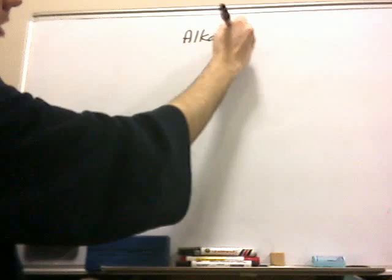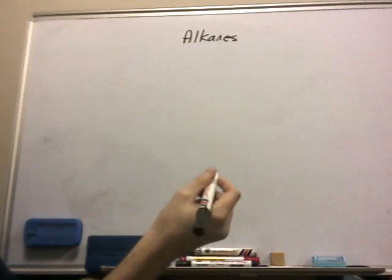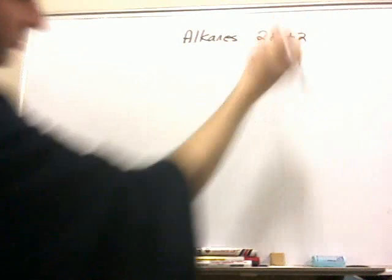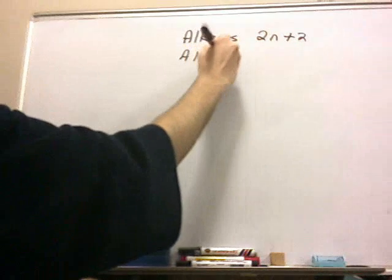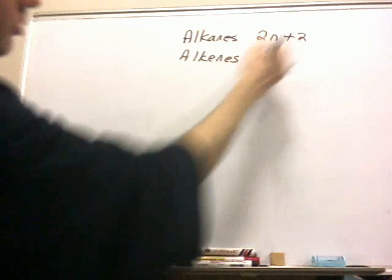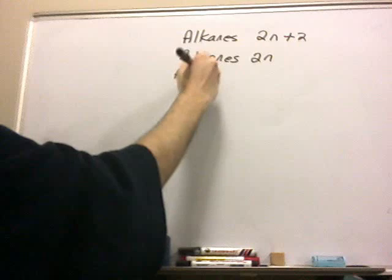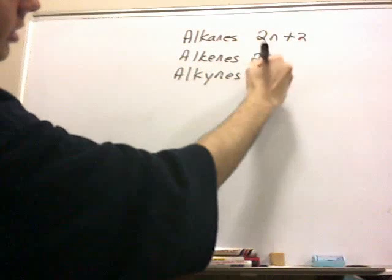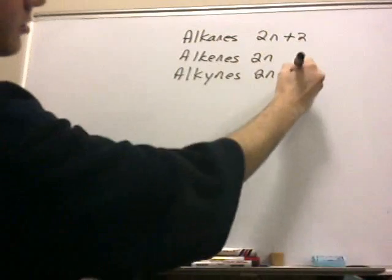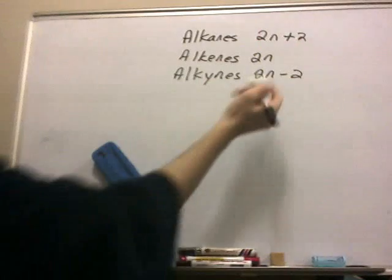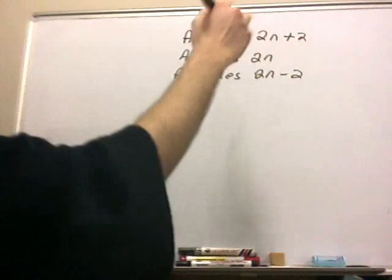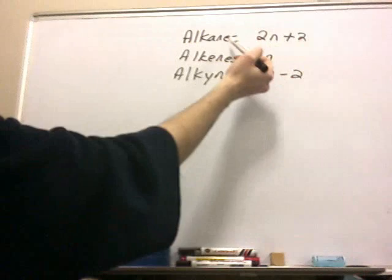Alkanes are carbon molecules that have no double bonds, only single bonds. You can denote them from formula 2N plus 2. Alkenes have one double bond or more, and you denote them by 2N. Alkynes have a triple bond, and it's 2N minus 2. N is the number of carbons in the molecule, and this formula will tell you the number of hydrogens.